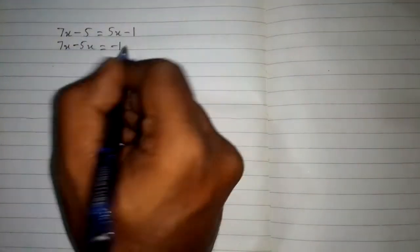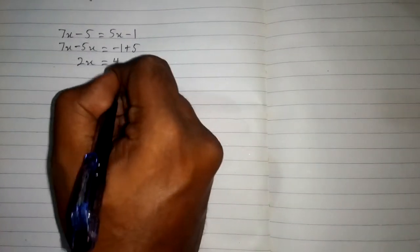And here we can see that we have minus 5 on this side, so this minus 5 will become plus 5. Now 7x minus 5x is 2x and minus 1 plus 5 is 4.